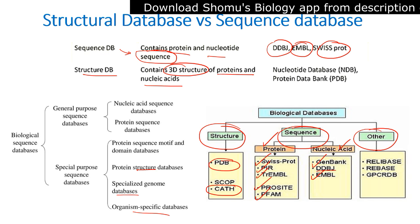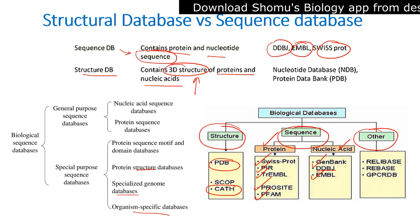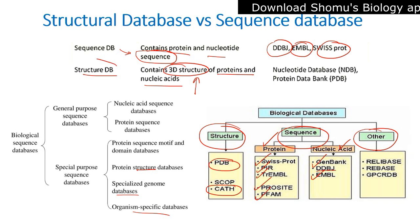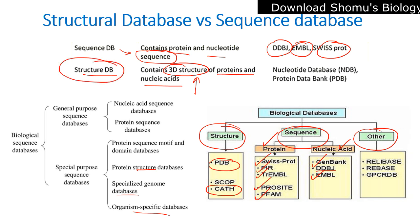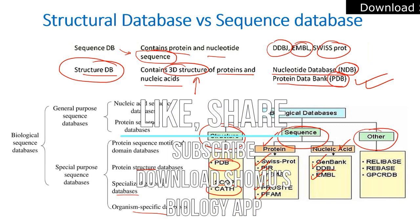In structural databases, we have 3D information of proteins and nucleic acids. Nucleic acids can also form secondary and tertiary structures, and that information is stored here, along with 3D protein structures which are vital for protein function. Examples include the Nucleotide Database (NDB) and Protein Data Bank (PDB). PDB is more commonly used, but NDB is also important for understanding how nucleic acid tertiary structures relate to cellular functions.